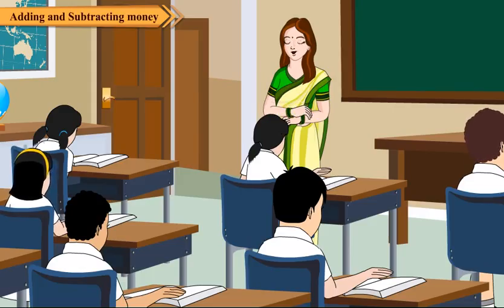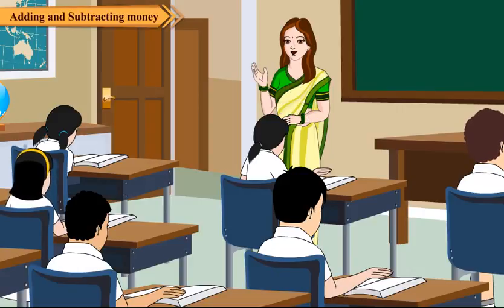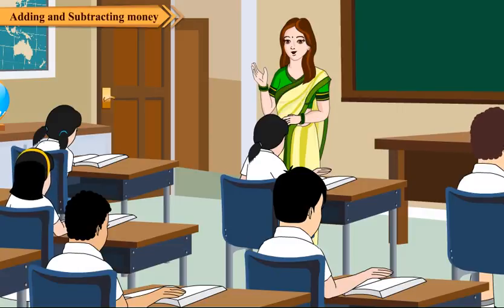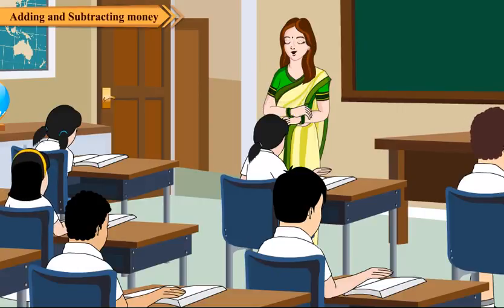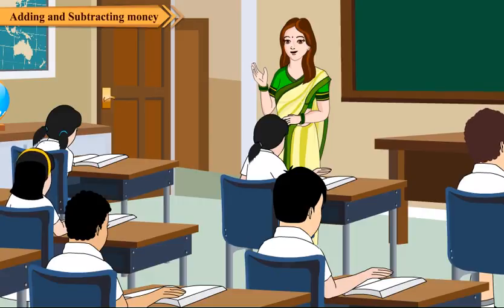Children, when we go shopping, we buy a number of items. For example, we may buy four packets of chips, five bottles of coke and so on. In such a situation, we must know how to multiply the cost by the number of items bought. Let us do a problem for this.